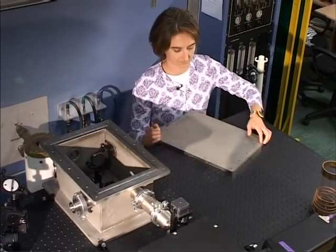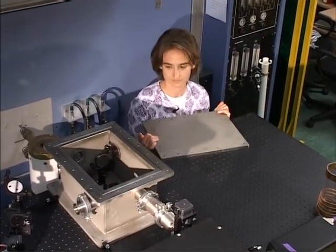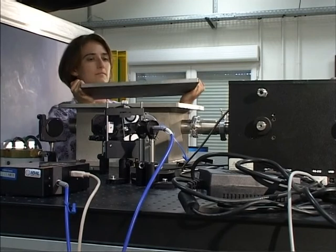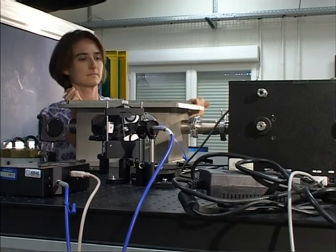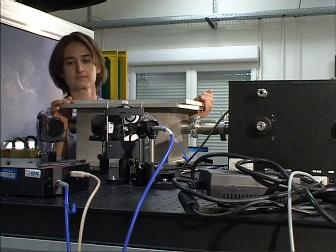For these vacuum ultraviolet studies, the optical path, including this optics box, is purged with nitrogen to prevent the oxygen in the lab air from absorbing the radiation from the plasma.